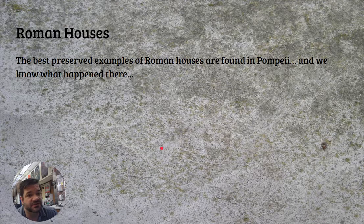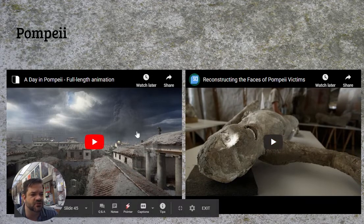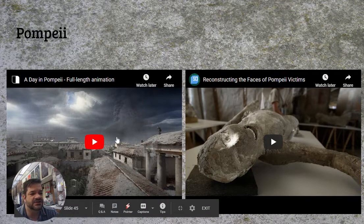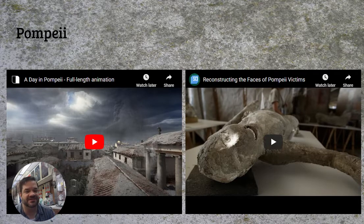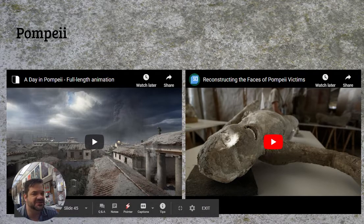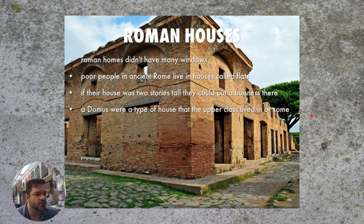Now let's look at the houses. The best-preserved houses come to us from Pompeii, and we know how that story ends — it's like when you start talking about the Titanic. There are two clips I want you to watch. One is going to talk about the destruction of Pompeii, checking in at four or five different moments throughout the day so you can see how the destruction is progressing. You're going to see how they found the bodies — they were eviscerated, but their forms were preserved in this really odd, quirky, and macabre way.